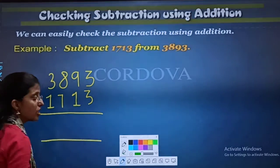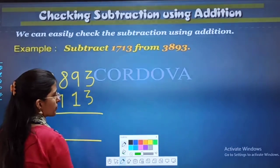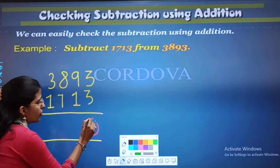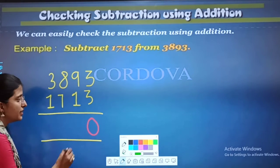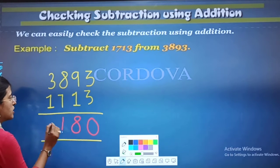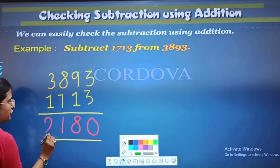Okay, kiddos? So, now, come on. 3 minus 3 is 0. 9 minus 1 is 8. 8 minus 7 is 1. And 3 minus 1 is 2.